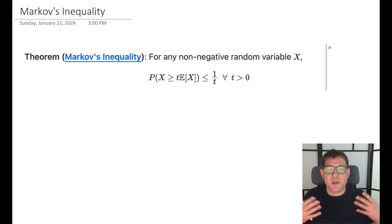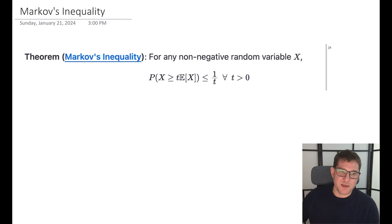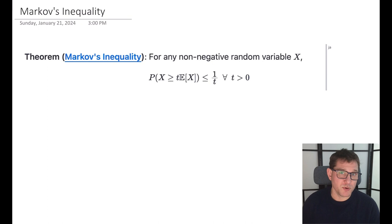Markov's inequality is actually a very intuitive inequality. If I eat on average two hamburgers a day, then the likelihood that I ate 10 hamburgers has to be less than 20 percent — you can't eat 10 hamburgers more than 20 percent of the time if you're only eating on average two a day, because 20 percent of 10 is 2. That's the idea behind Markov's inequality, and it happens to be a pretty easy fact to prove with one small trick.